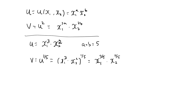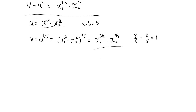This means that this utility function and this utility function represent the same preferences. However, the utility function v is a normalized Cobb-Douglas utility function, as 3 over 5 plus 2 over 5 is 1. Hopefully, this illustrates that you can always take a Cobb-Douglas utility function and normalize it without changing preferences.